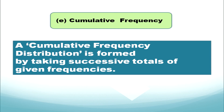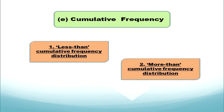Now cumulative frequency — a very important series. A cumulative frequency distribution is formed by taking successive totals of given frequencies, meaning we successively add up the given frequencies. It can be constructed in two ways: less than cumulative frequency distribution, and more than cumulative frequency distribution.